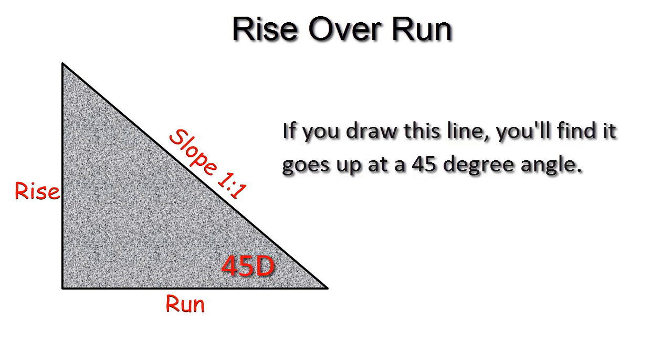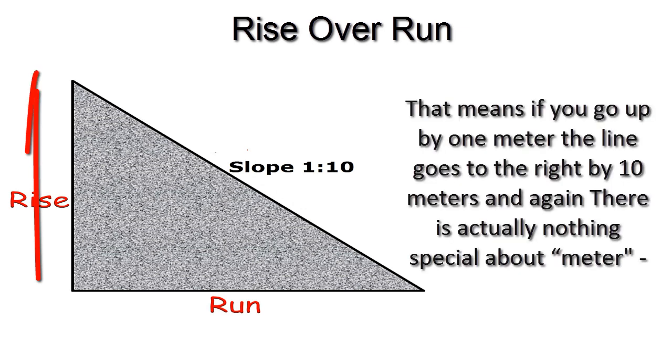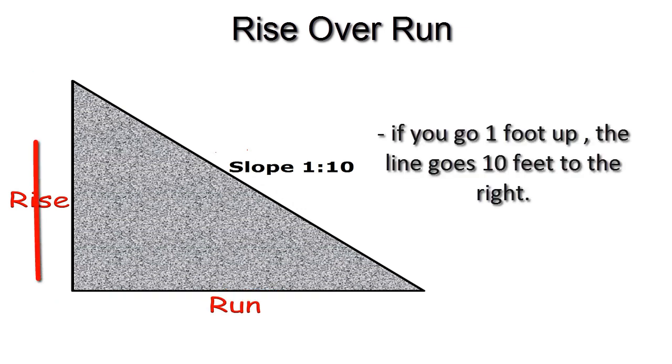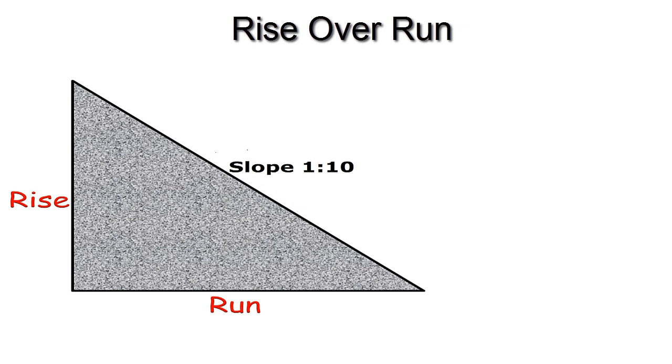If you go one mile up, the line goes one mile to the right. If you draw this line, you'll find it goes up at 45 degrees. Similarly, if the slope is 1:10, that means if you go up by one meter, the line goes to the right by 10 meters. Again, there's nothing special about meters—if you go one foot up, the line goes 10 feet to the right.